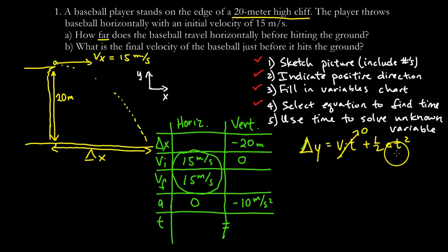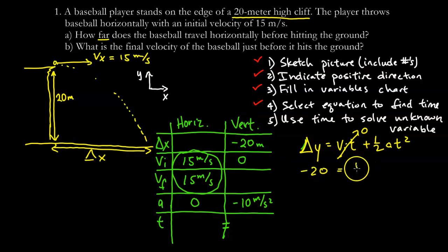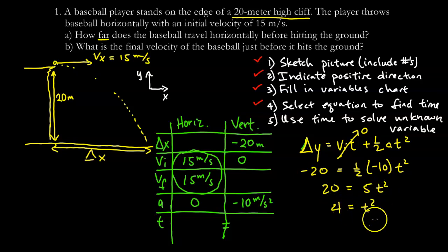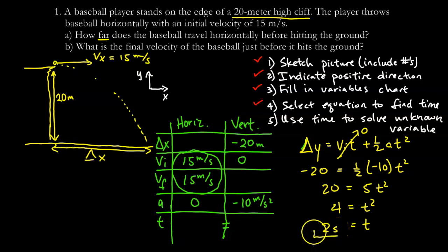Since the initial vertical velocity is zero, the equation simplifies to: delta y equals one-half times a times t squared. Substituting: negative 20 equals one-half times negative 10 times t squared. The negatives cancel, giving 20 equals 5t squared, so t squared equals 4, and t equals 2 seconds.